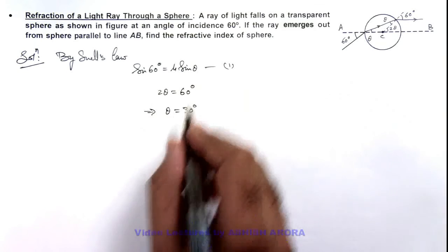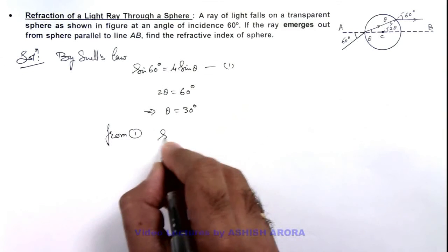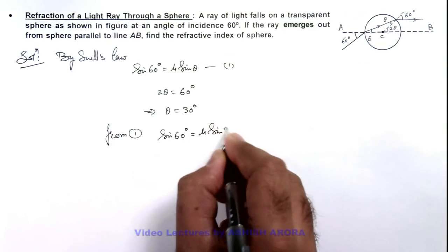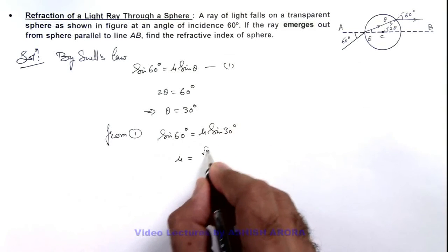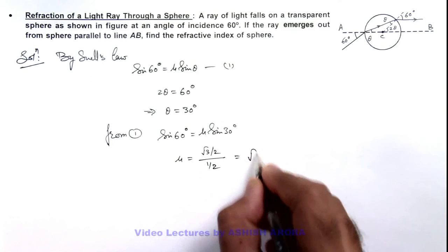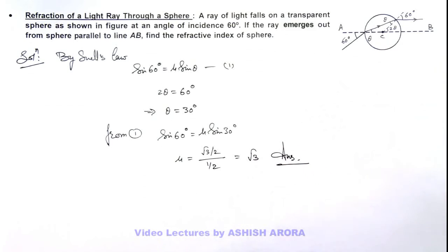From equation 1, we can substitute: sine 60 degrees equals mu times sine 30 degrees. This gives us mu equals sine 60 over sine 30, which is root 3 over 2 divided by 1 over 2, so the result is root 3 for the refractive index of the sphere.